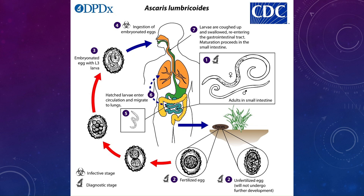Life cycle of Ascaris lumbricoides: fertilized and unfertilized eggs are shed in the feces of infected individuals. The fertilized egg, through developmental mechanisms, converts into embryonated eggs. Humans ingest these embryonated eggs, which reach the small intestine. Larvae hatch, enter the circulation, and migrate to the lungs. Larvae are coughed up and swallowed, re-entering the gastrointestinal tract. Maturation occurs in the small intestine, where larvae become adults and again shed fertilized and unfertilized eggs into the feces.